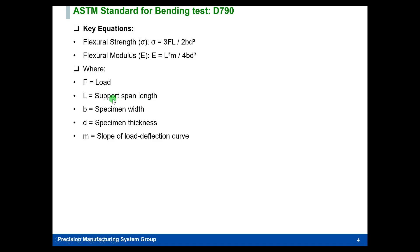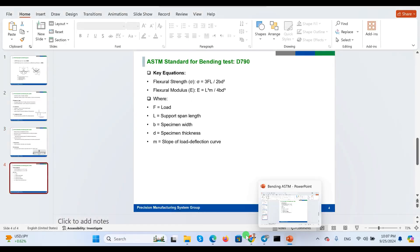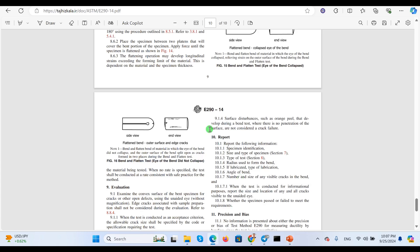We can calculate the flexural strength and modulus using this formula, where F stands for load, L stands for span length, b is the specimen width, d is the specimen thickness, and the slope of the load-deflection curve is also used in the calculation.